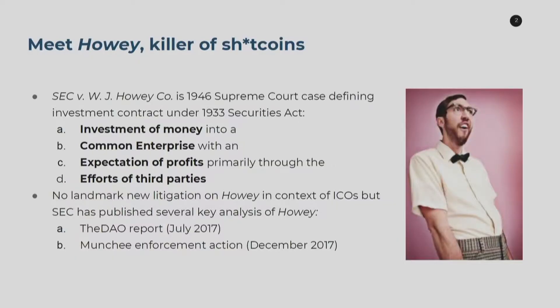The two big pieces of SEC interpretation of Howey were the DAO report in July 2017 — not an enforcement action, but a statement saying the DAO was a security and providing a first glimpse of their Howey test thinking — and then the Munchee enforcement action letter in December 2017, which said you can't call something an ecosystem token when you're really just selling it to make money. It's a frustrating process in terms of uncertainty, but it is ironically a decentralized form of lawmaking.